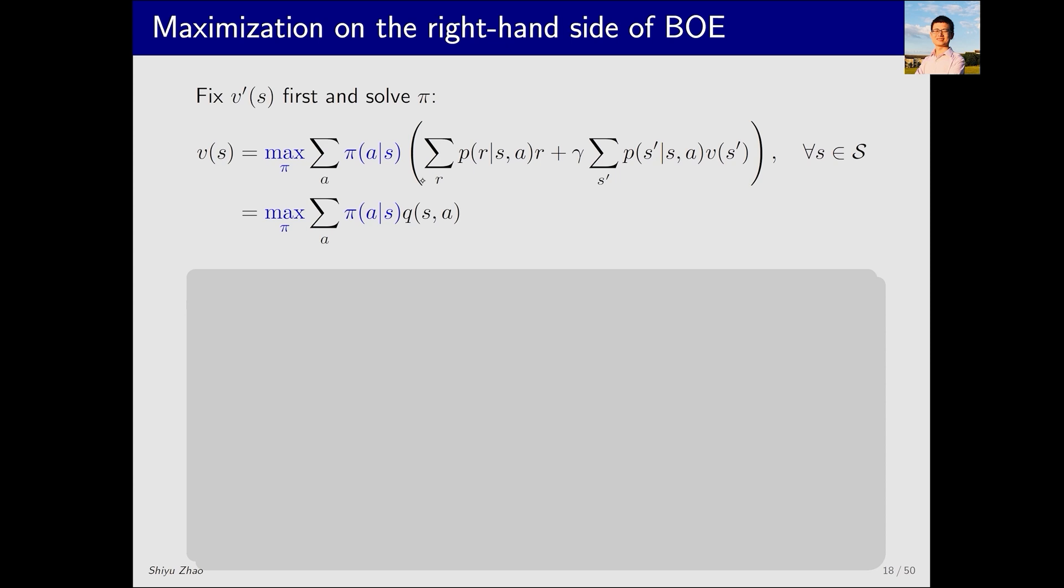First, look at the right-hand side of the Bellman equation. This term and this term are fixed. This is an unknown term. For any value of this term, we can abbreviate it as Q(s,a). Inspired by the previous example, we need to determine π(s,a).